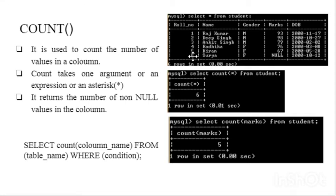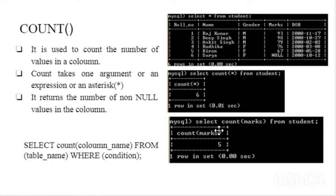There are 6 records in the table, so the output will be 6. If we give an argument as a column name, it will return the non-null values in that column. For example, SELECT COUNT(marks) FROM student — marks is the column and it will count the non-null values. There are 6 values out of which 1 is NULL, so it will count 5 values and return 5.